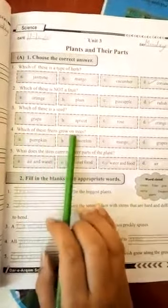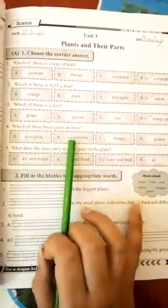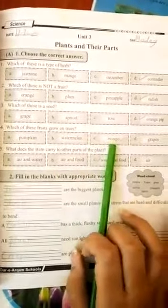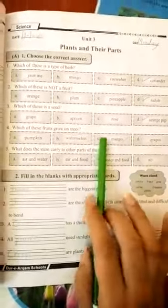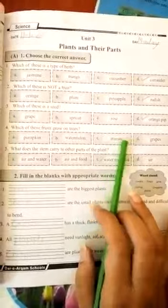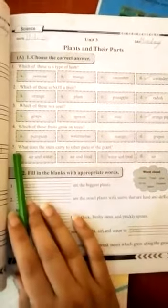Number five, what does the stem carry to other parts of the plant? A. air and water, B. air and food, C. water and food, D. air. C is the answer.